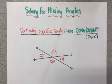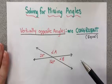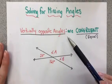Solving for missing angles. In this example, we're talking about solving for missing angles when we have vertically opposite angles.